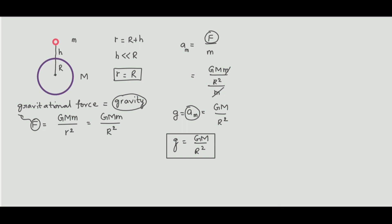What about the acceleration of capital M, the earth? Its acceleration would be F by capital M. But since the mass of the earth is very large, the acceleration of the earth is almost equal to zero. Earth is not going to accelerate.